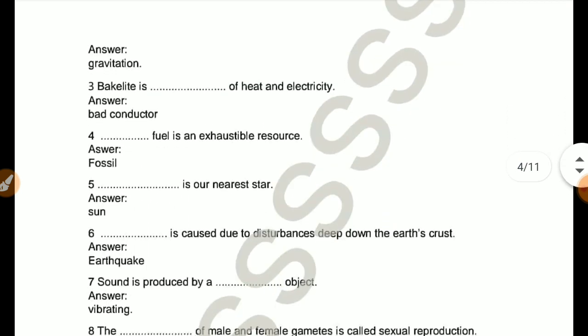Bakelite is bad conductor of heat and electricity. Fossil fuel is an exhaustible resource. Sun is our nearest star.